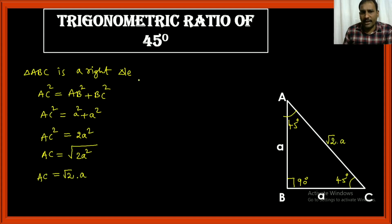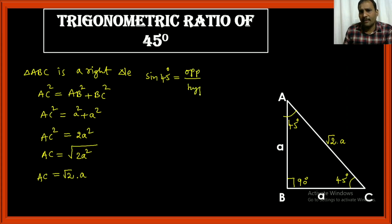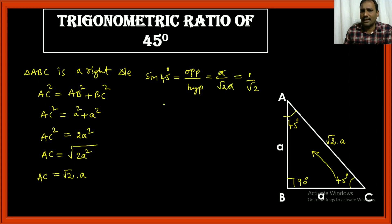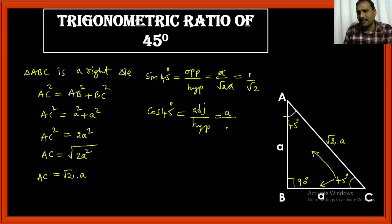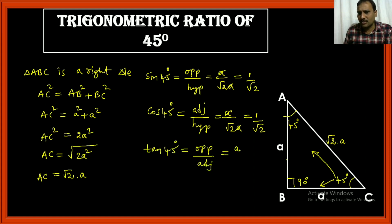Now let us find sin, cos, and tan for 45 degrees. Sin 45 is opposite by hypotenuse: a by √2·a = 1/√2. Cos 45 is adjacent by hypotenuse: a by √2·a = 1/√2. Tan 45 is opposite by adjacent: a by a = 1.